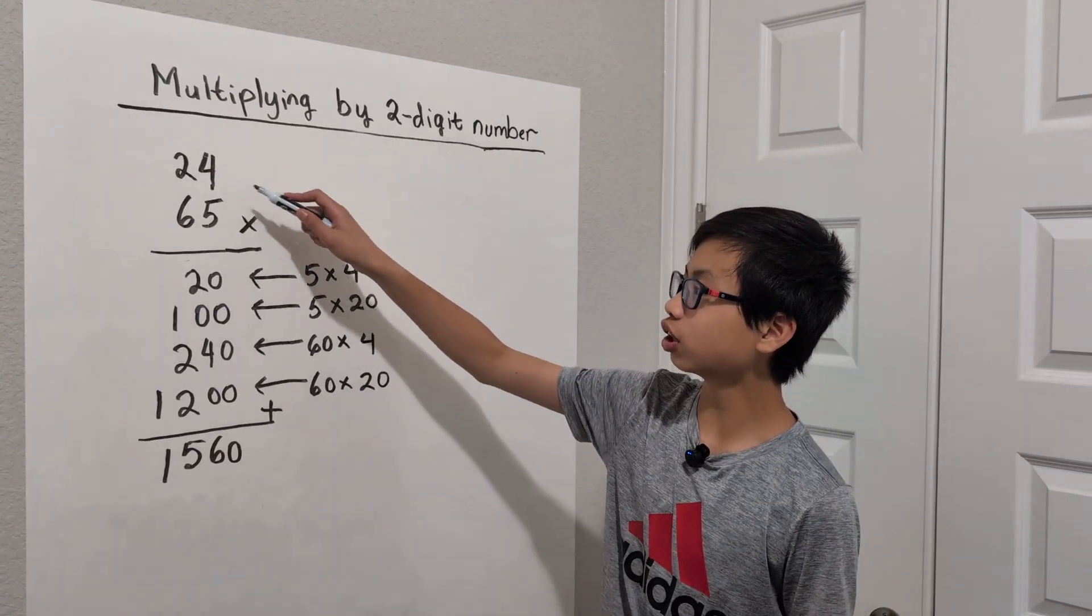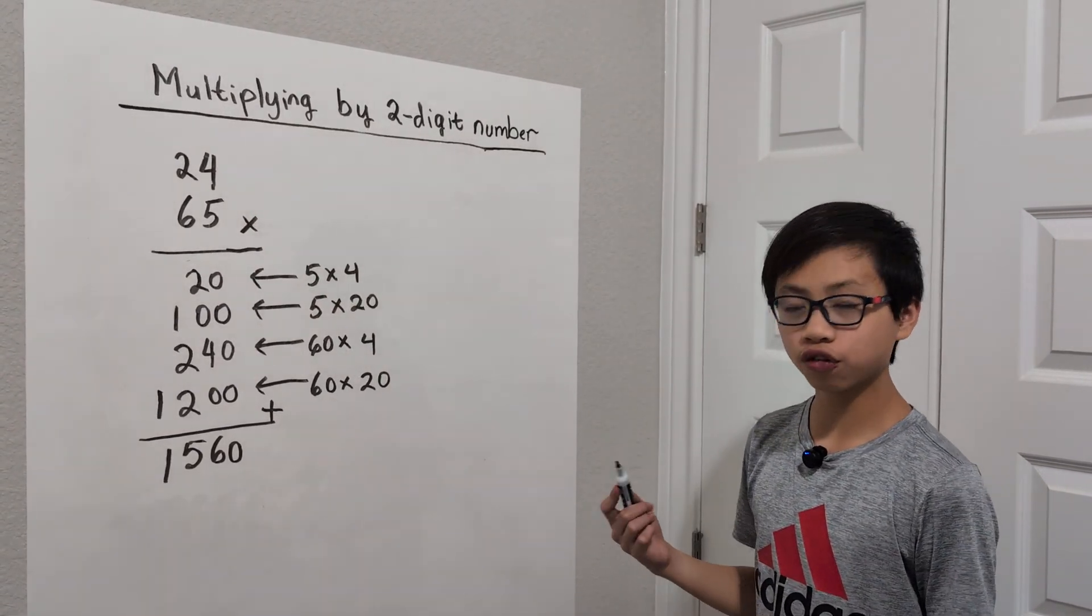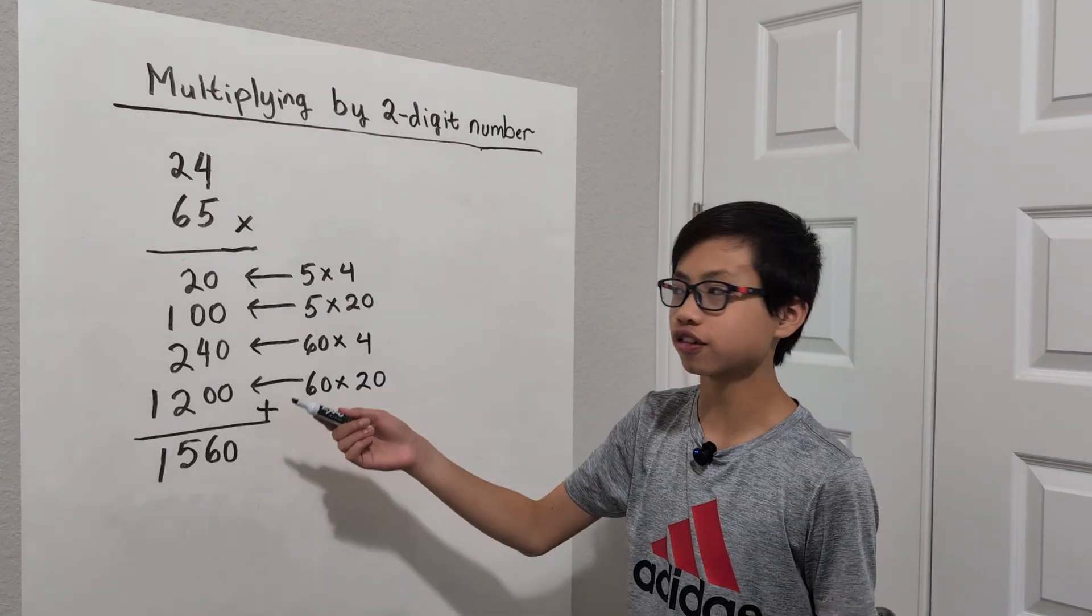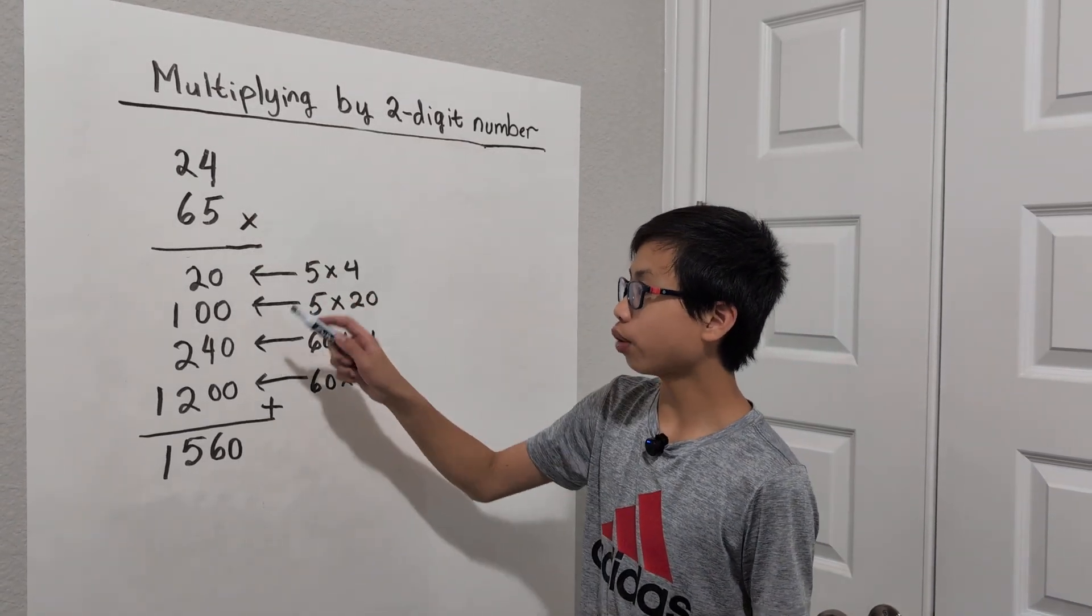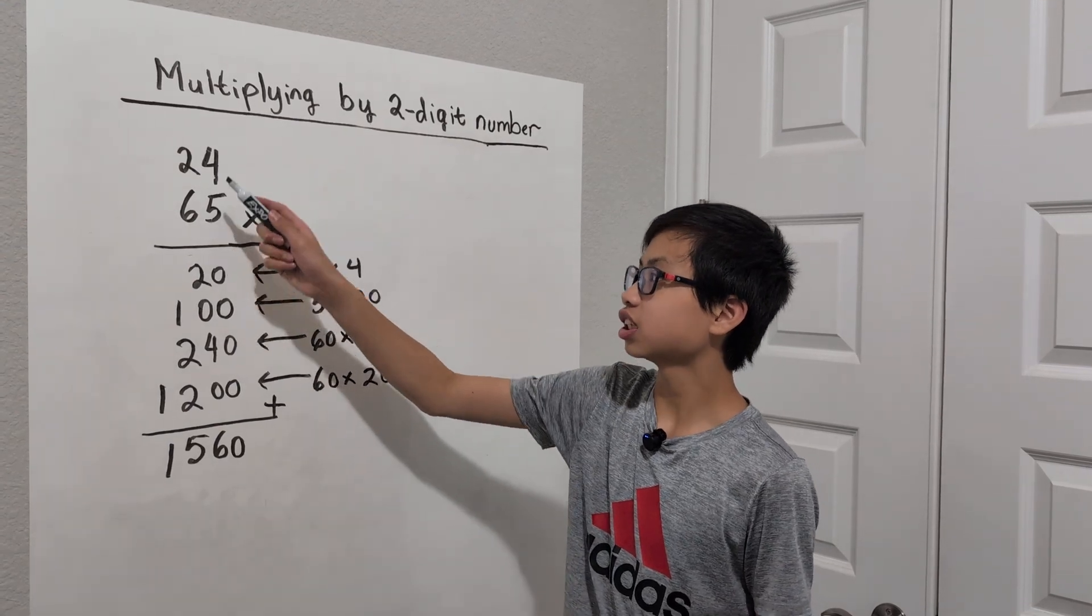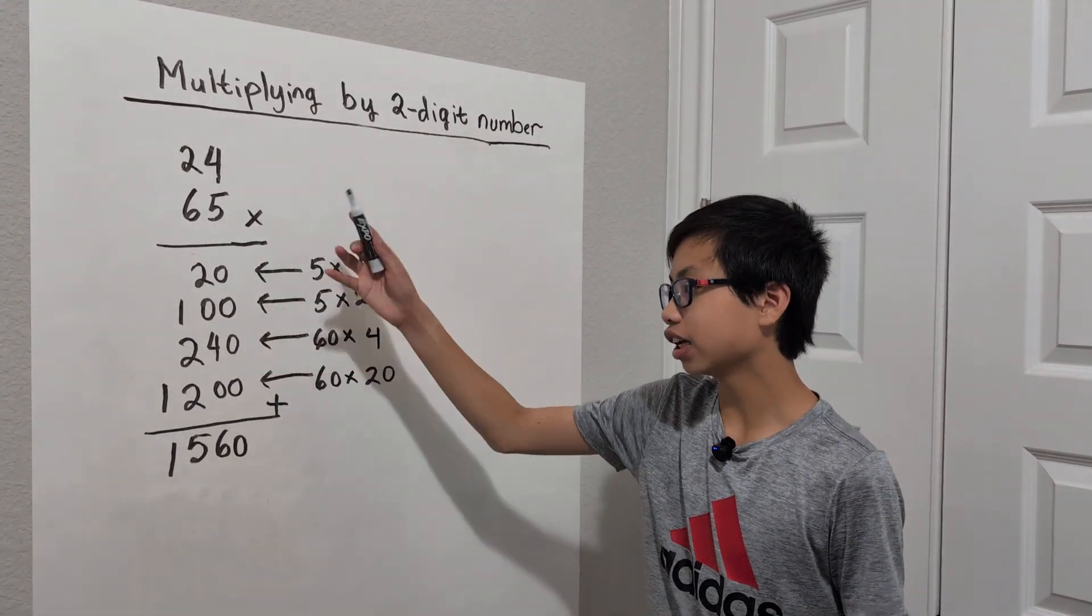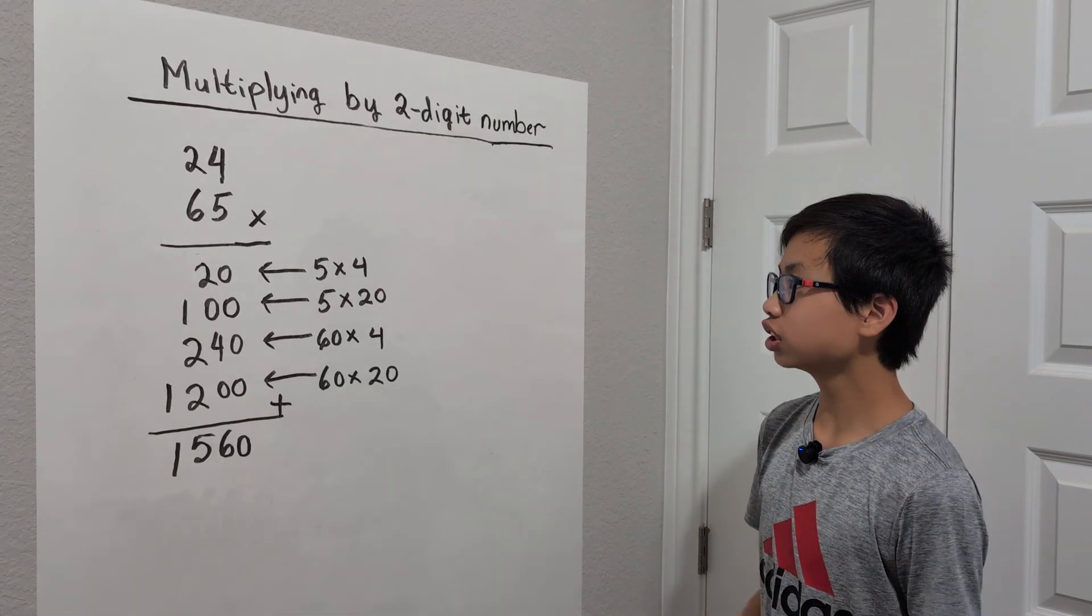In the example 24 times 65, what we're going to first think about is how are we going to solve this? Well, what we're going to do is do 5 times 24, write it down, then do 6 times 24, and then after that write it down and then add them all up.